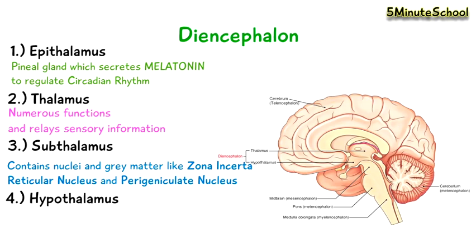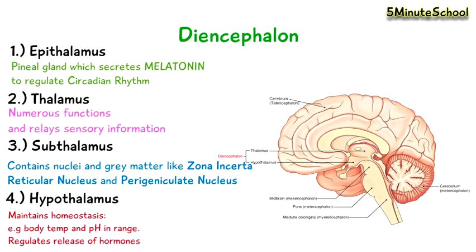The thalamus has numerous functions including relaying sensory information, and the hypothalamus acts to maintain homeostasis, ensuring that things like body temperature and blood acidity are kept within a certain range. It does so by regulating the release of certain hormones.